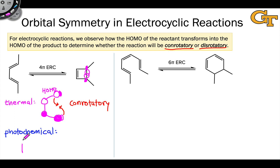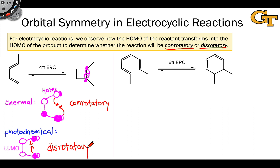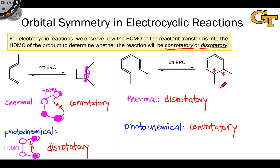In the photochemical case, the LUMO of the pi system transforms into the HOMO of the product. Now we have the same phase on either end of the pi system, so the p orbitals on either end rotate in opposite directions — one clockwise and one counterclockwise — to form the new sigma bond in phase. This is a disrotatory motion. For the 6π electrocyclic case, the conclusions flip: thermal reactions are disrotatory and photochemical reactions are conrotatory. There are profound stereochemical implications, since conrotatory and disrotatory motions generate diastereomers of the product with two new stereocenters, allowing us to change stereochemical selectivity simply by switching from thermal to photochemical conditions.